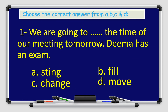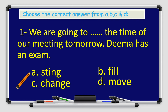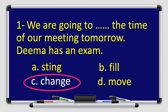That's all with the vocabulary boys and girls. Now let's have some practice. I want you to read and choose the correct answer from A, B, C, and D. Number 1: We are going to space the time of our meeting tomorrow — Dima has an exam. A: sting, B: fill, C: change, or D: move. That's right, it's C: change.